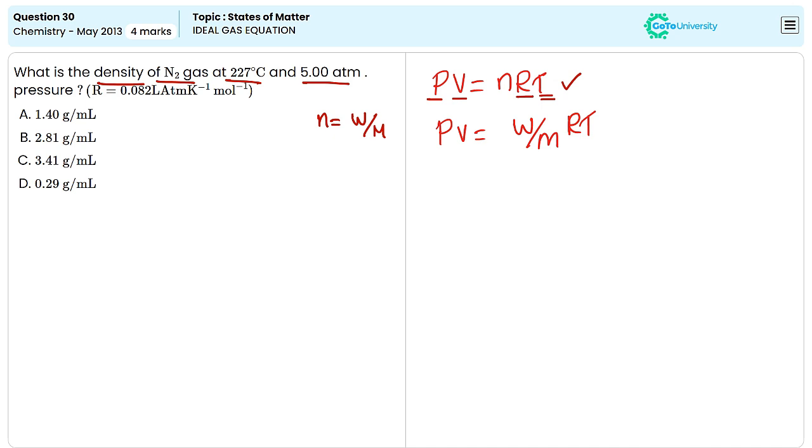We can rearrange this equation for the value of P, that is P is equal to WRT divided by MV. Here, the question is to find out the density. We have the equation density D is equal to mass by volume.